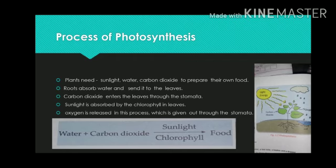Roots absorb water and send it to the leaves. Carbon dioxide enters the leaves through the stomata. Sunlight is absorbed by the chlorophyll in leaves. Carbon dioxide and water combine in the presence of sunlight and chlorophyll to form food. In this whole process, oxygen is released which is given out through the stomata.